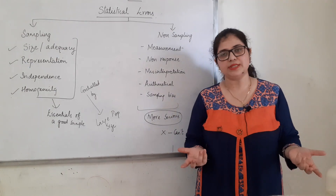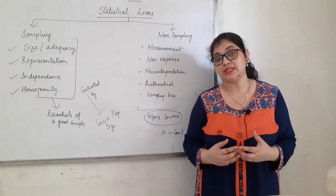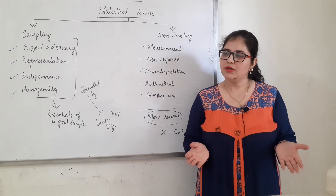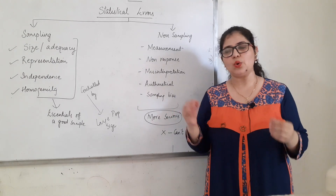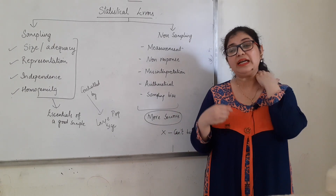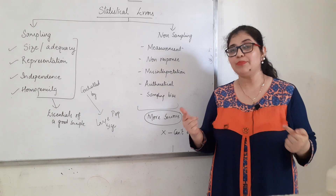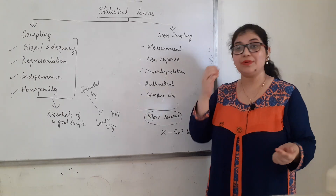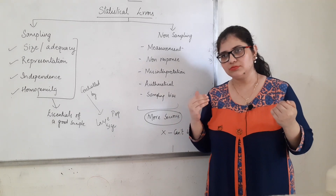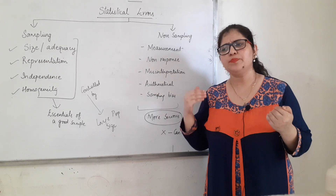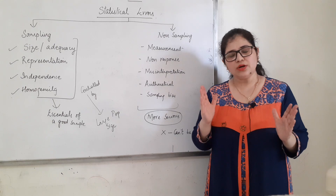Fourth non-sampling error is arithmetical error — calculation mistake hai. Choti moti calculation mistake jo dikh jati hai jab karo — toh calculation mistake hoti hai. Arithmetical errors hote hai aur woh aage chapters mein jab correlation karenge, we'll talk about it — woh aapki saari interpretation galat kar deta hai. And finally, fifth is sampling bias — aapne jab sampling create ki, aapne kuch bias kiya hai, jaanbujh ke samples add kiye ya aapka koi personal influence aa gaya hai jis ki wajah se aapka sample galat ho gaya.